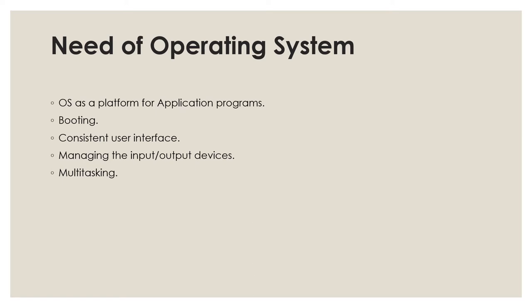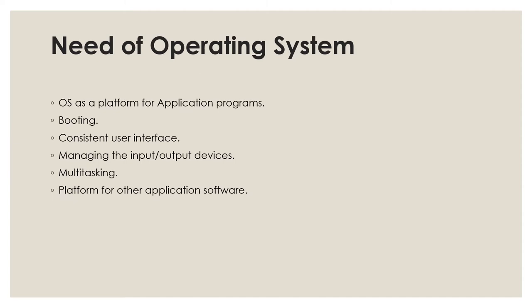Multitasking gives users a good experience as they can perform several tasks on a computer at a time. Next is being a platform for other application software — users require different application programs to perform specific tasks, and the operating system manages and controls these applications so they work efficiently. Next is managing memory — the OS helps in managing the main memory of the computer. Then it manages system files. And finally, the OS provides security, keeping the system and applications safe through authorization.